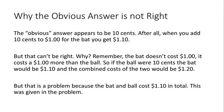But that can't be right. The bat doesn't cost $1 — it costs $1 more than the ball. So if the ball were $0.10, the bat would be $1.10. And the combined cost of the two would be $1.20 — that is, $1.10 plus the $0.10 ball. That's a problem, because the bat and the ball are supposed to only cost $1.10 in total. This was given in the problem.